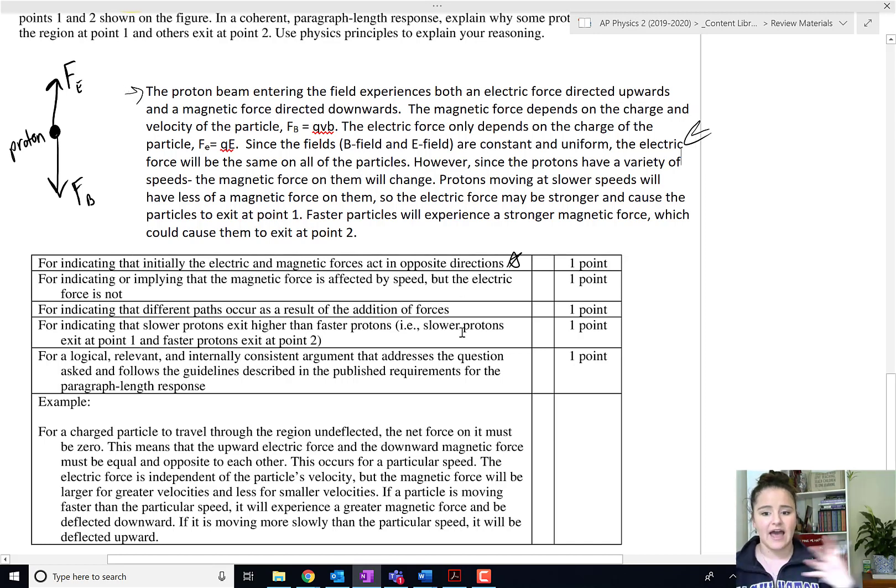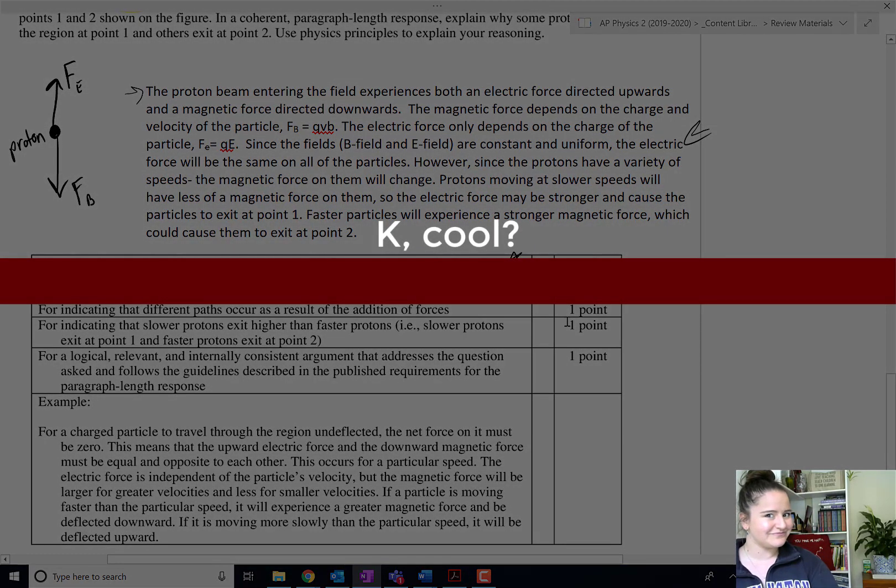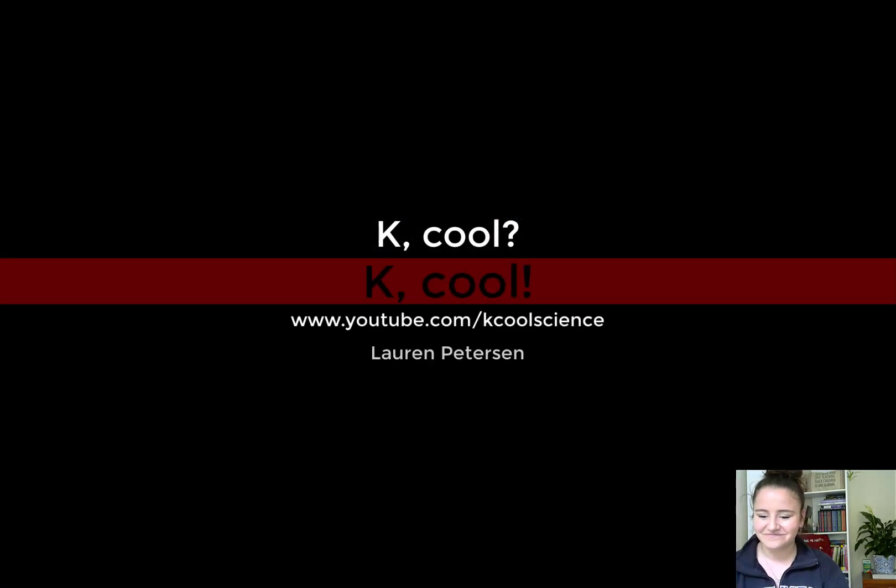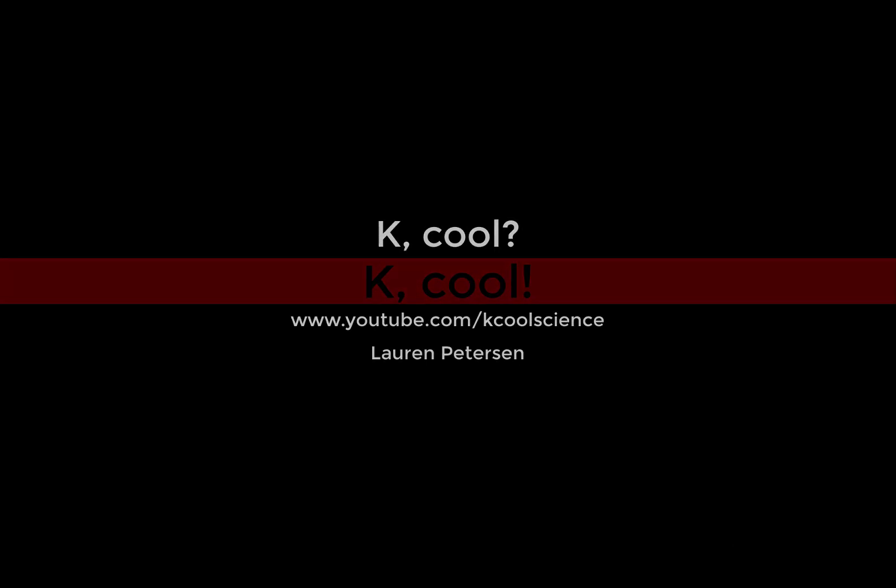Because I said the fields are constant and uniform, the electric force will be the same, but the magnetic force will change. So I am getting at that relationship between the forces. We got the slower protons exit higher than faster protons and we are good to go.